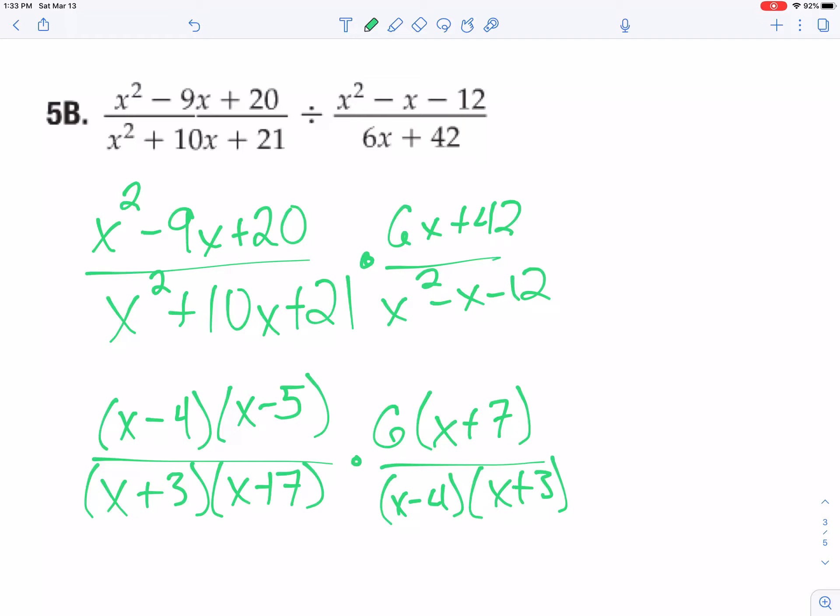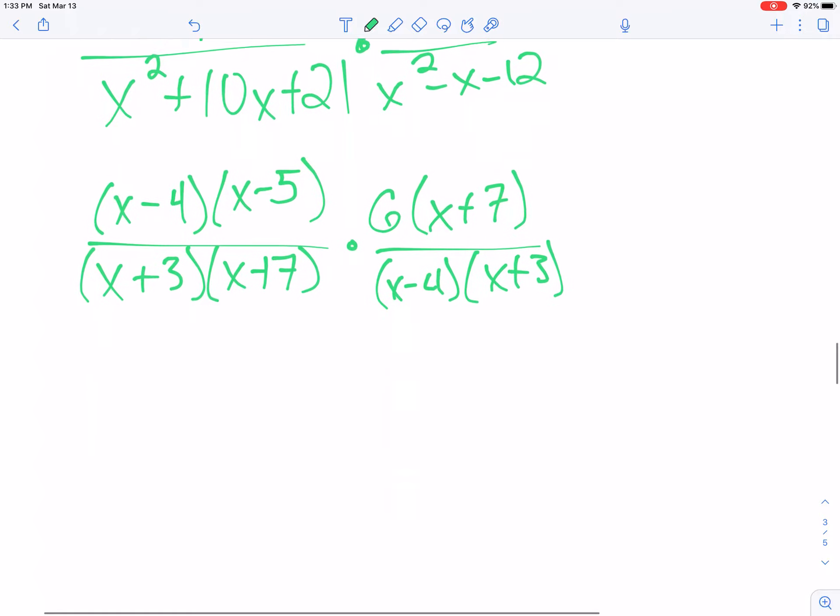Okay, these have a lot of factoring in them, warning you now. Now from here I can just start canceling away the things that are the same, like this x minus 4, or this x plus 7.